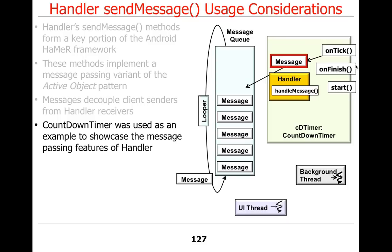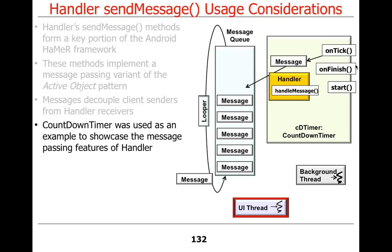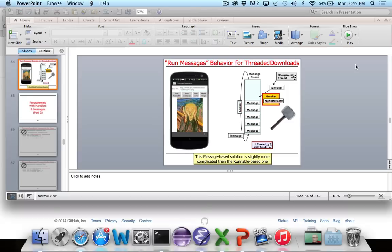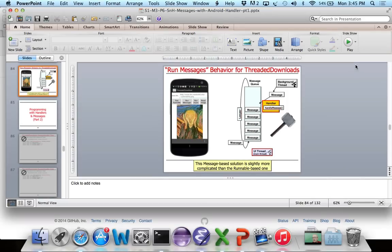There's a trade-off between flexibility and simplicity. Sending and handling messages is a little more flexible than posting and processing runnables, but also a little more complicated. Posting runnables is really simple but doesn't do quite as much. CountdownTimer is a nice example - you can look at the code and it illustrates all the things you need to be aware of in this context.